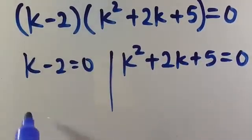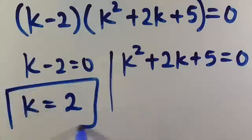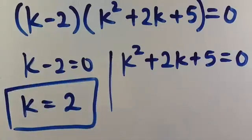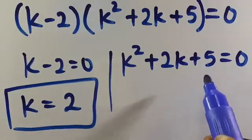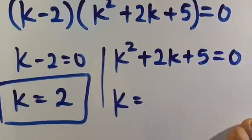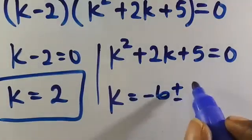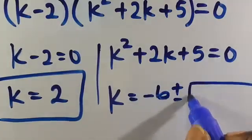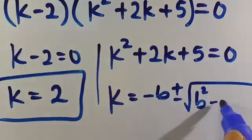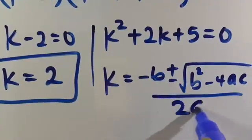From the first factor, we get k equals 2 as the real solution. Now let's find the other solutions from the quadratic k² plus 2k plus 5 equals 0, using the quadratic formula: k equals minus b plus or minus square root of b² minus 4ac, all divided by 2a.